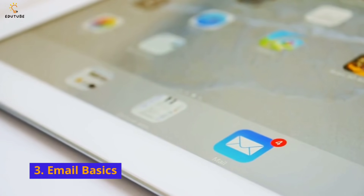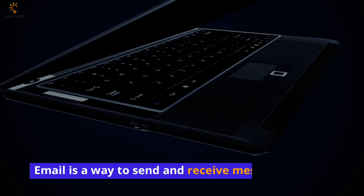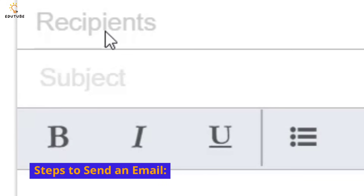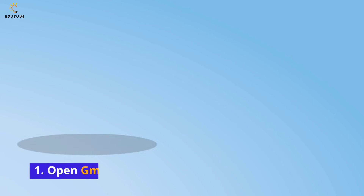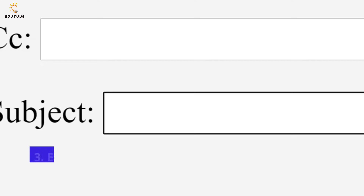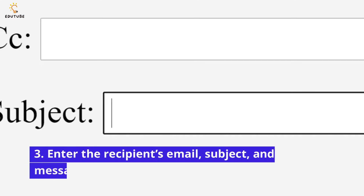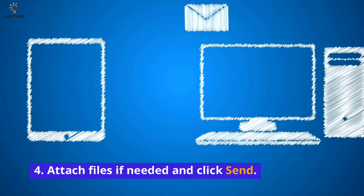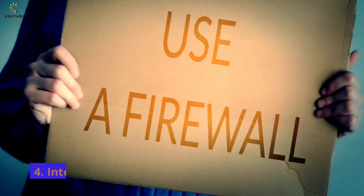Email basics: Email is a way to send and receive messages. Steps to send an email: open Gmail, click Compose, enter the recipient's email, subject, and message, then attach files if needed and click Send.